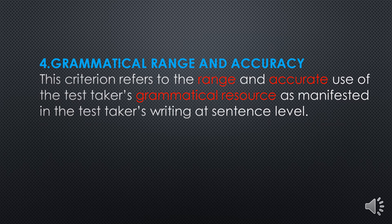Number four: Grammatical Range and Accuracy. This criterion refers to the range and accurate use of the test taker's grammatical resource as manifested in the test taker's writing at sentence level. These four criteria are used to assess your Writing Task 1.